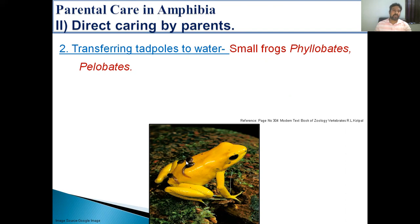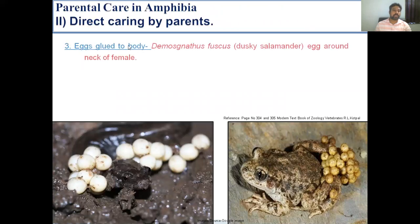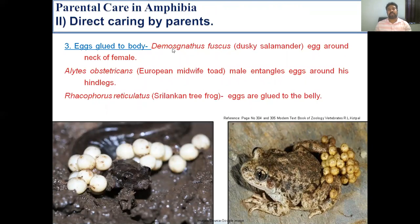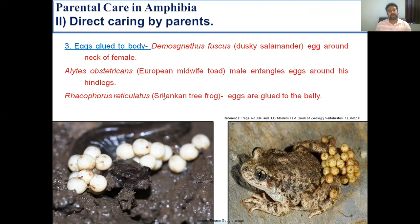The next way of direct caring by parents is eggs glued to the body. In this type of parental care, the parents directly glue the eggs to the body. For example, in the case of Desmognathus fuscus, commonly called the Dusky salamander, the eggs are carried around the neck of the female. In the case of the European Midwife toad, Alytes obstetricans, the male entangles the eggs around its hind legs. The third example is Rhacophorus reticulatus, the Sri Lankan tree frog, where the eggs are glued to the belly region.